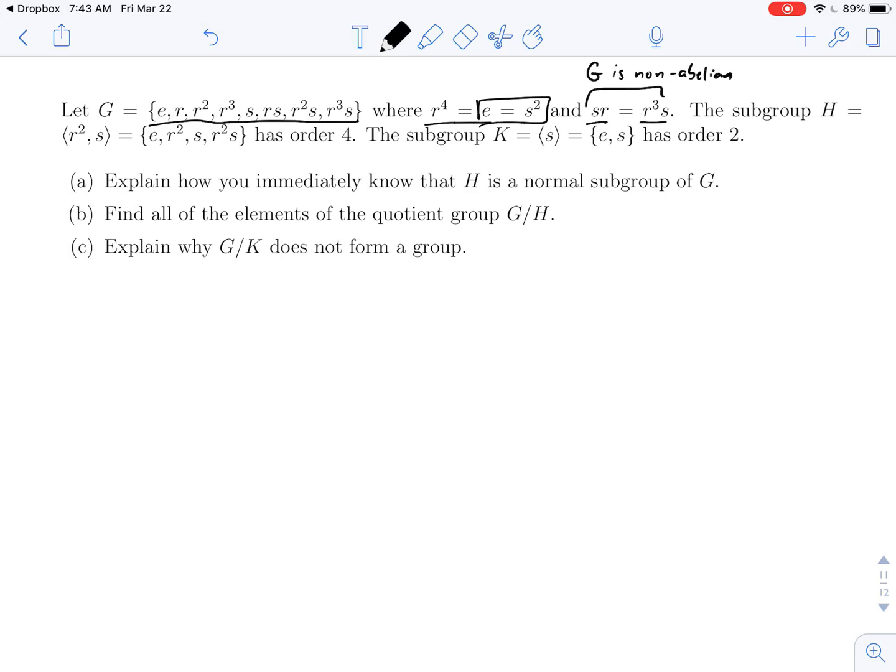Then we have a subgroup generated by R squared and S. So this will have the identity, of course. It'll have R squared and S. And then it needs to have their product, which is R squared S. The reason why we don't need any more elements is because R squared has order two, because R to the fourth is E. And S has order two, and their product, R squared S, also has order two.